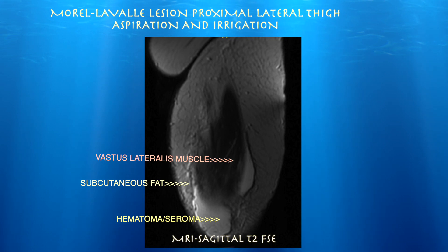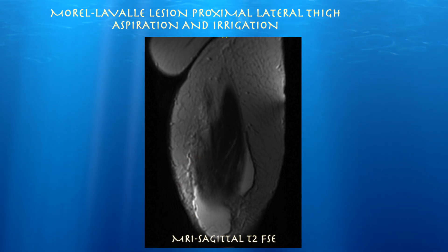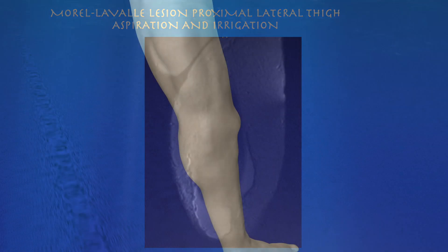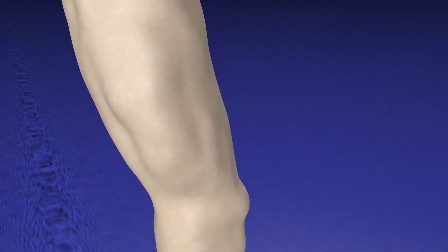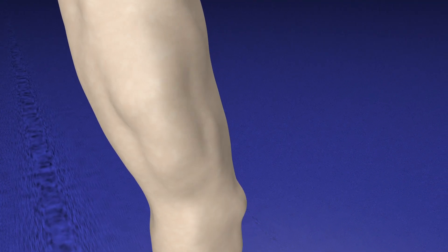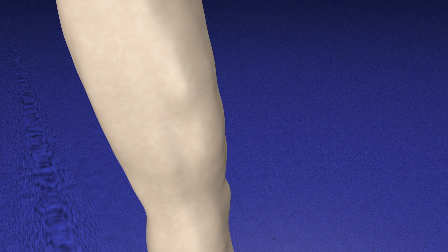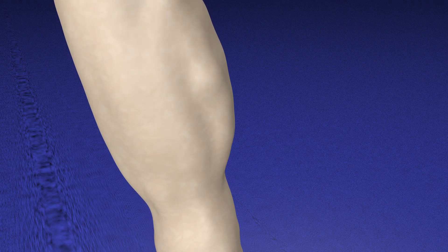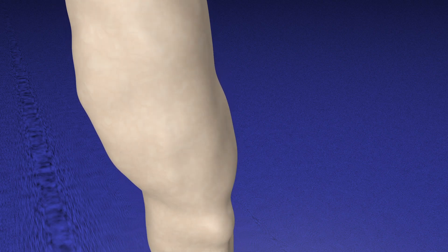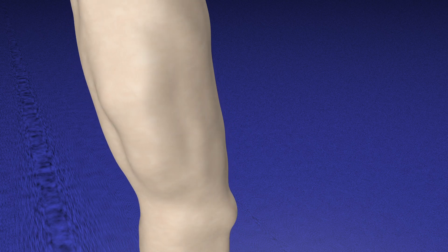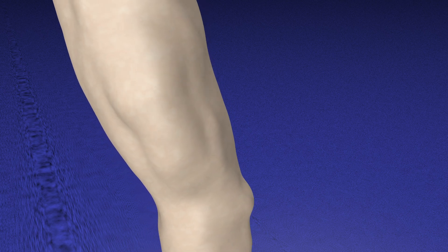Here's a sagittal view where you can see the lesion basically right over the vastus lateralis muscle. This patient has a very large fluid collection in the lateral thigh, essentially just bulging out from the lateral thigh. You can imagine how much fluid can accumulate in a space this large.